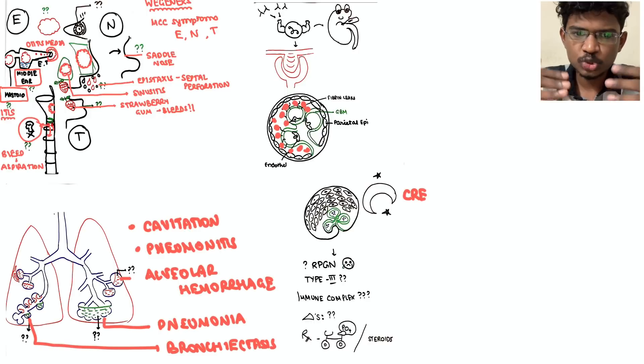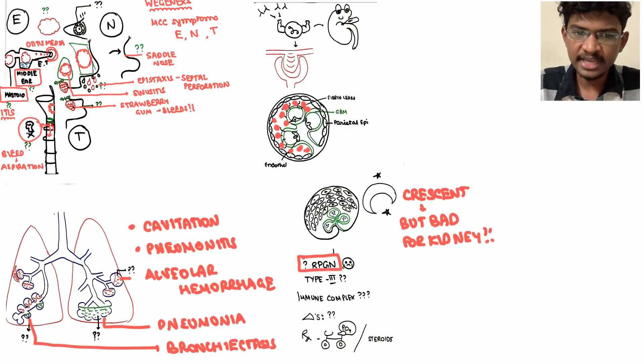Next, with respect to kidney, if you see, again deadly here, what happens is the fibrin exudated out of the capillaries will irritate the parietal epithelial cells. They will grow, form a fibrin cap around the glomeruli, which is the crescents. They might look nice, but they are deadly for the patient.